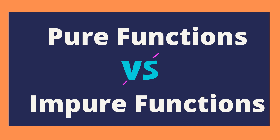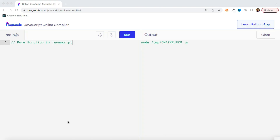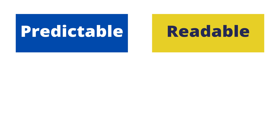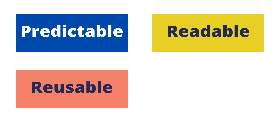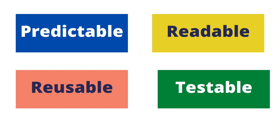Without any further ado, let's get started. In your daily coding session you must be writing functions that take in some input and return some output based on certain conditions. While writing functions, we should take care of certain conditions: we need to make sure that functions are predictable — producing a predictable output for the same input — readable, reusable at multiple places without changing behavior, and testable as an independent unit.